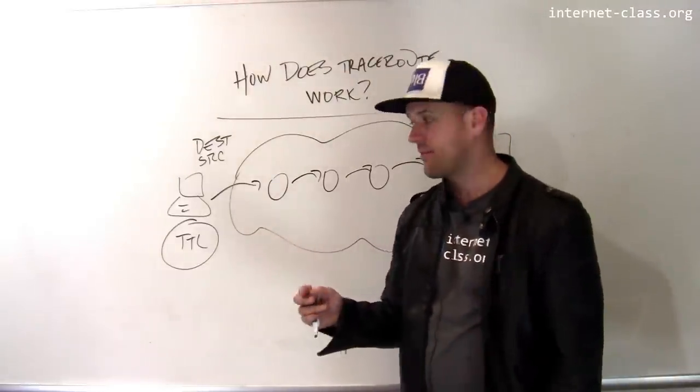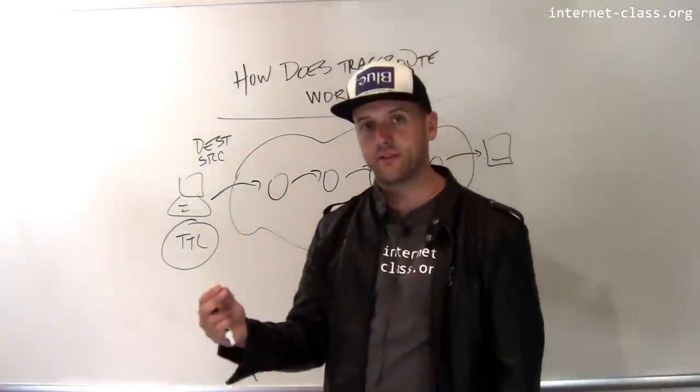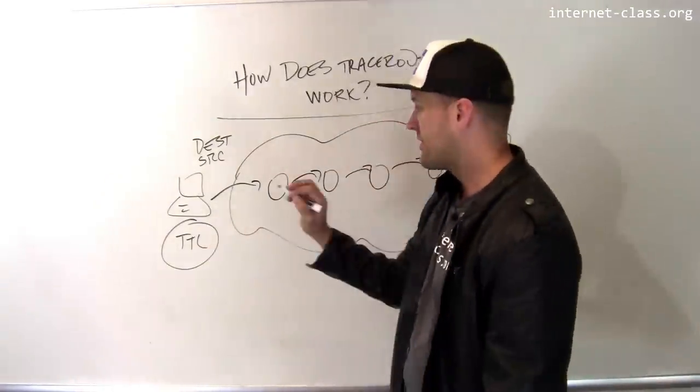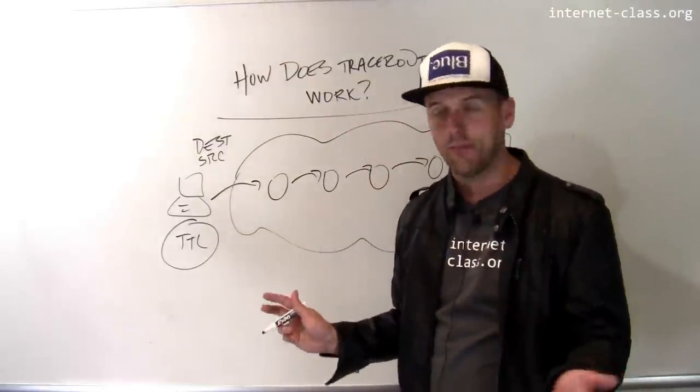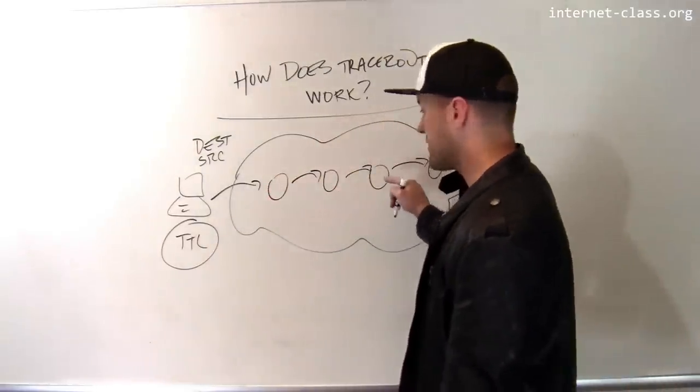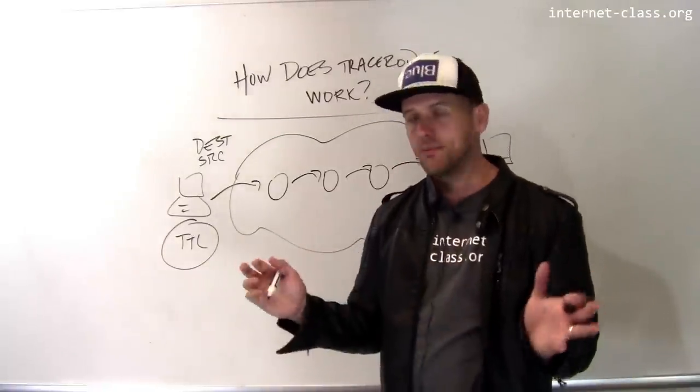So the time to live field is used by routers to prevent this from happening. And here's how it works. I initialize the time to live field to some value, 64 is a common value that's used. Every time the router retransmits the packet to another router, it decrements the time to live.